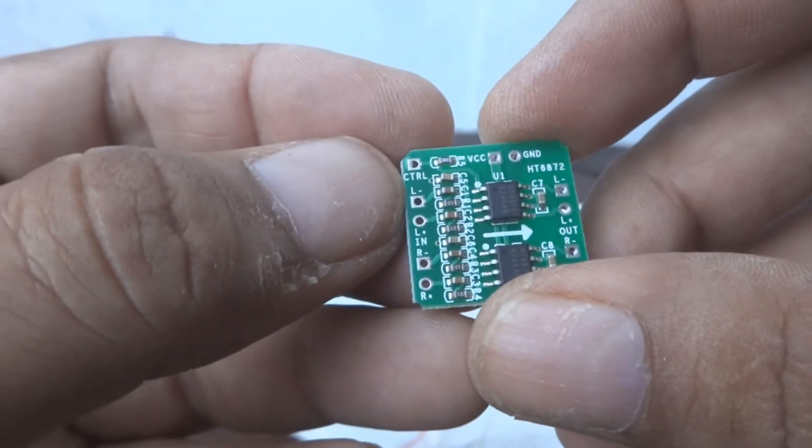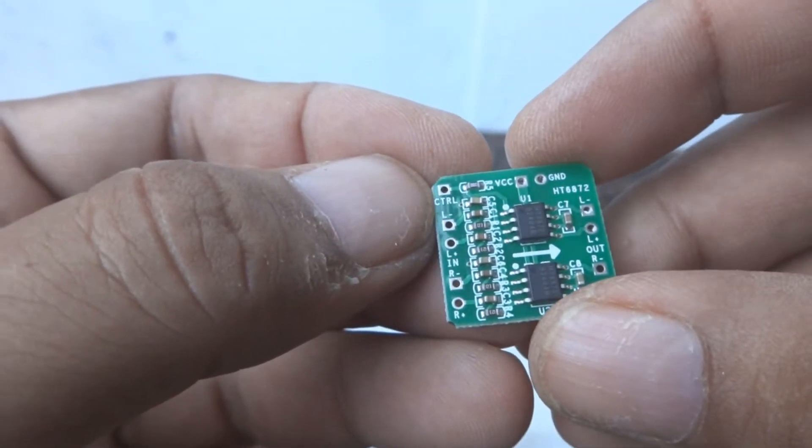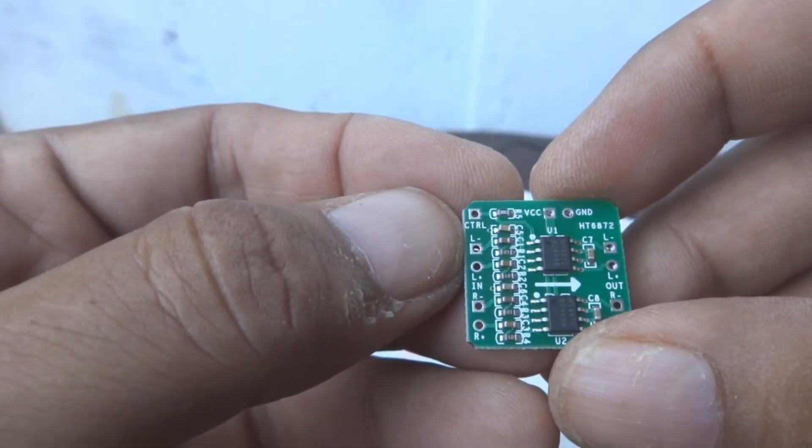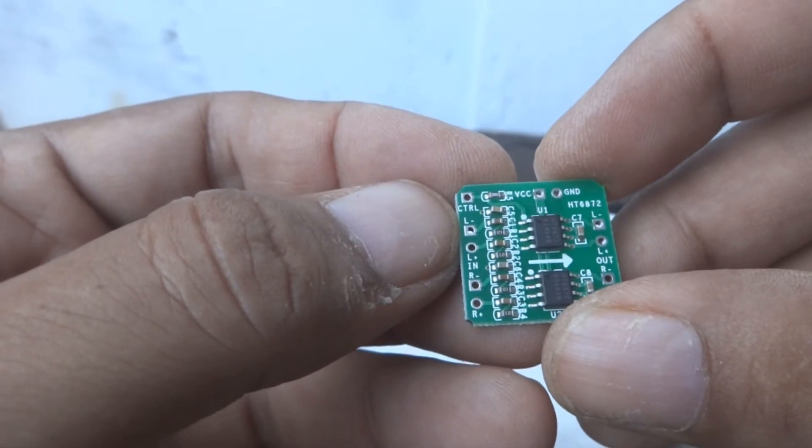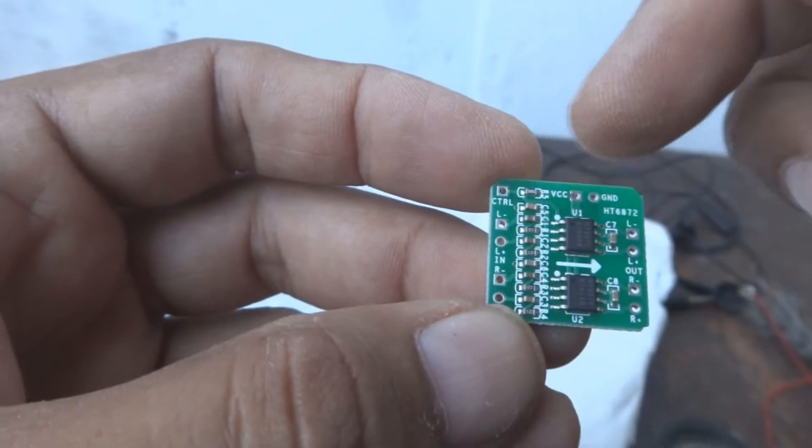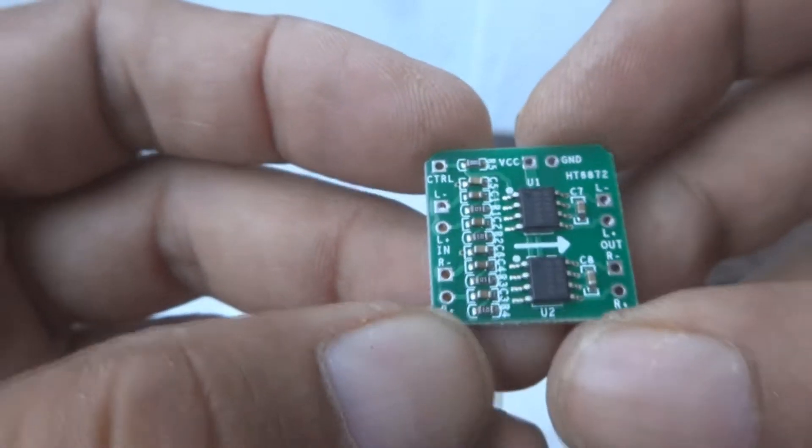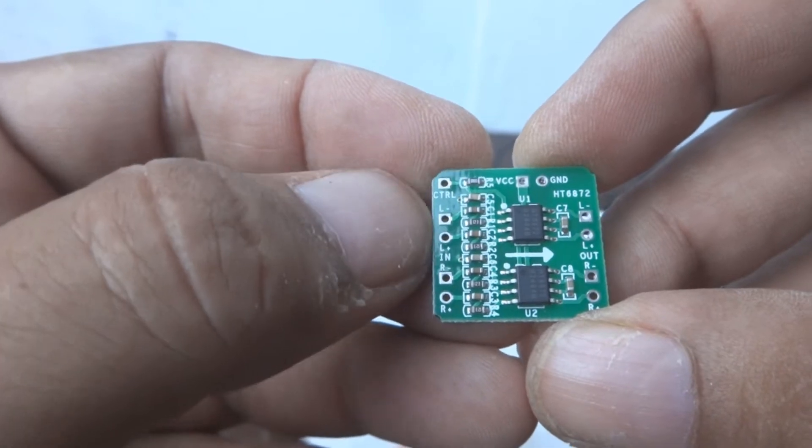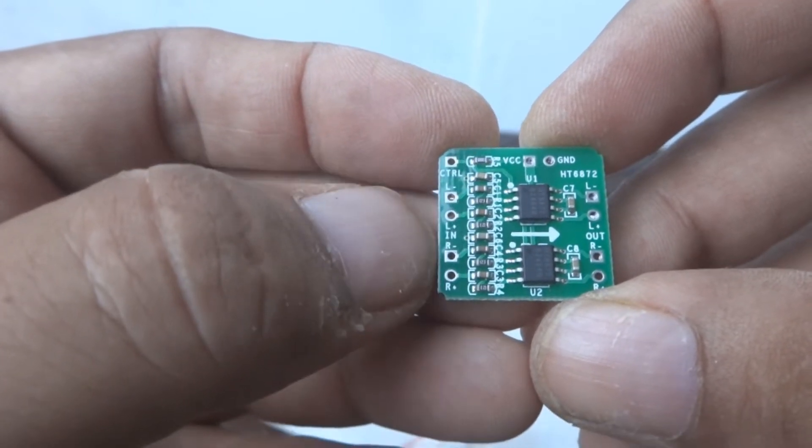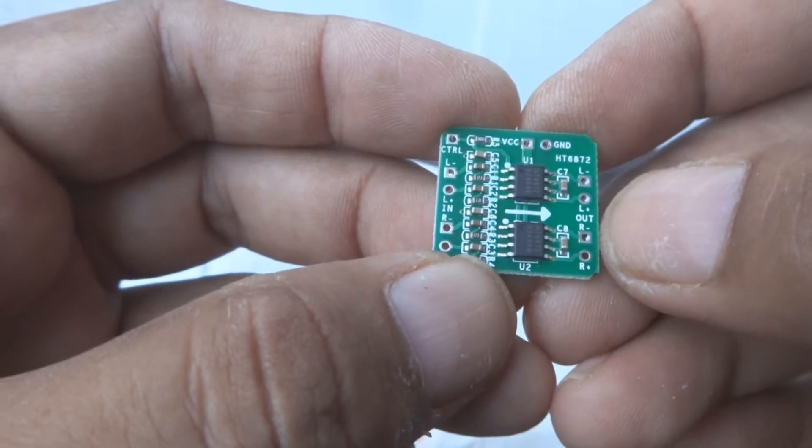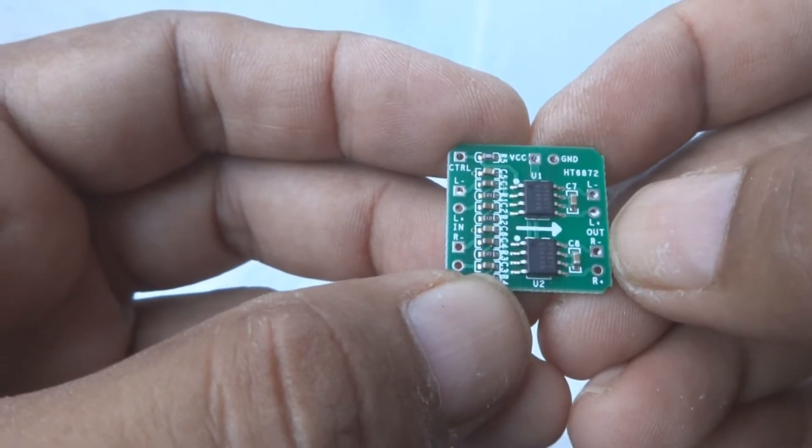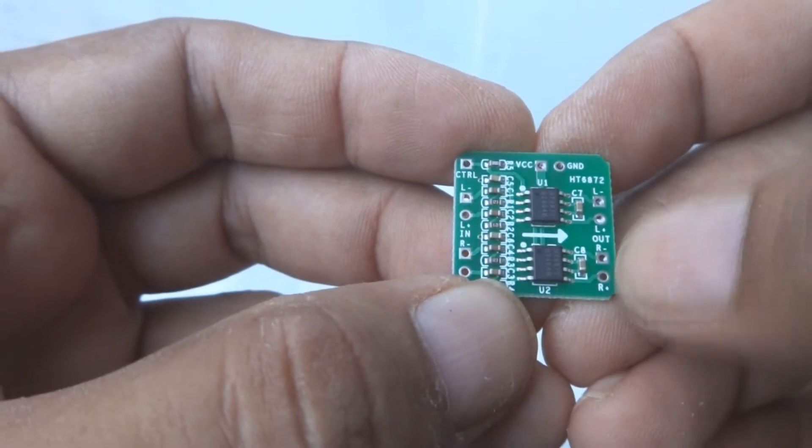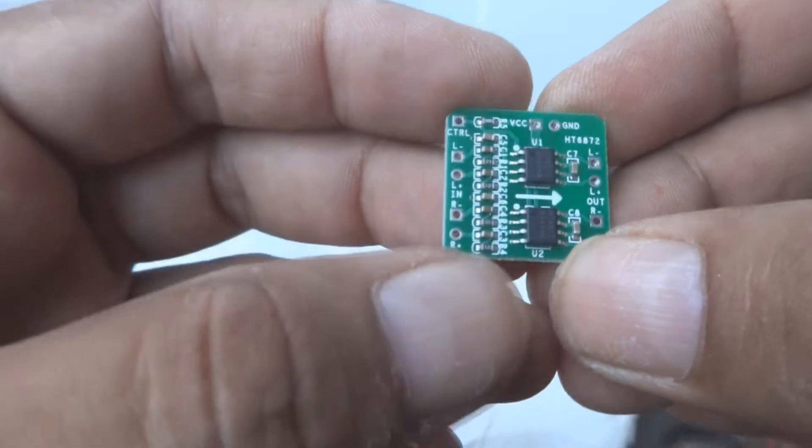Here are the connection details for new people. Experts know very well what this means. Here is the VCC and ground. Here is the input: L plus, L minus, R plus, R minus. The output is L minus, L plus, R minus, R plus.